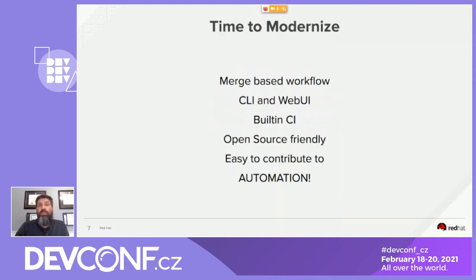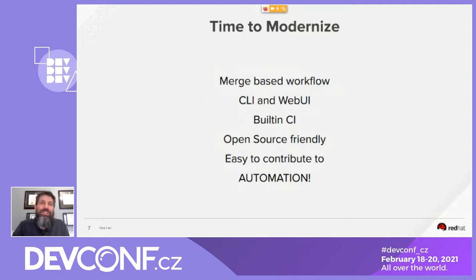What do we want this new workflow to look like? First, we agreed it had to be a merge-based workflow. It needed a robust API to build CLI tools and interact with it. All developers love their CLI tools. Having a web UI was okay, but not higher on our priority list. Having a built-in automated testing tool was a plus, along with open-source friendliness and being easy for developers to use. Most importantly, it had to drastically reduce the manual burden of the maintainer.